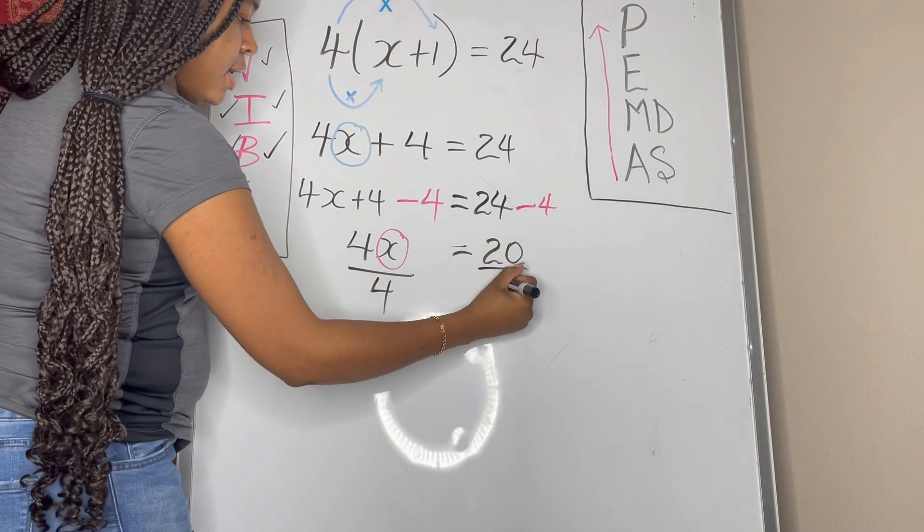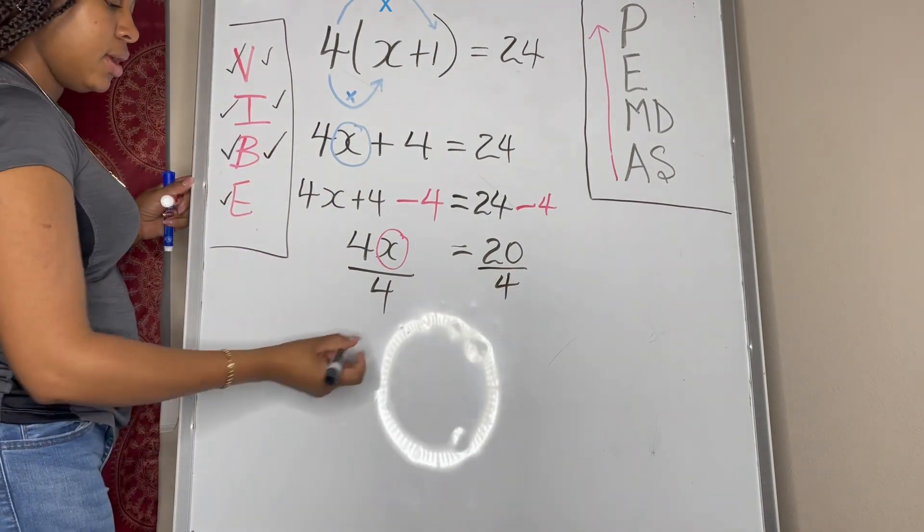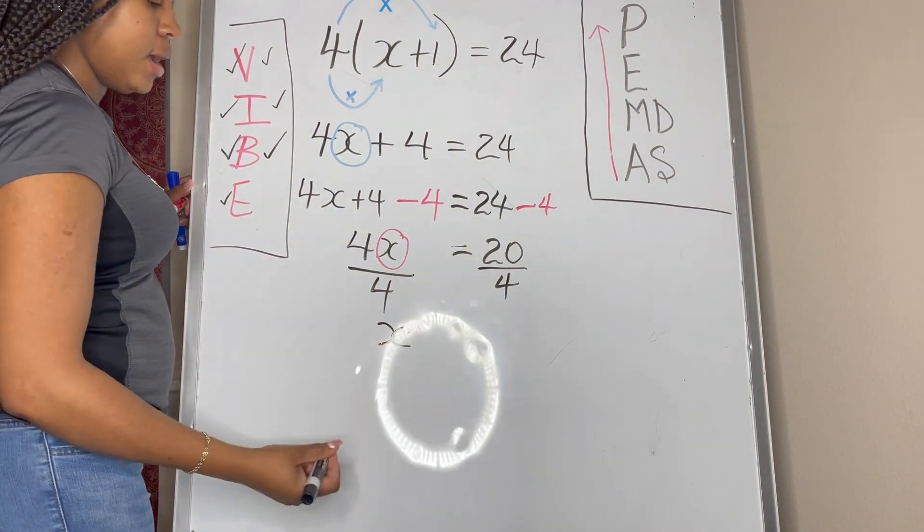Of course we need to do our balancing act, so we need to divide that side by 4 as well. And now 4 divided by 4 is just 1, so we have our x, that invisible one is there.